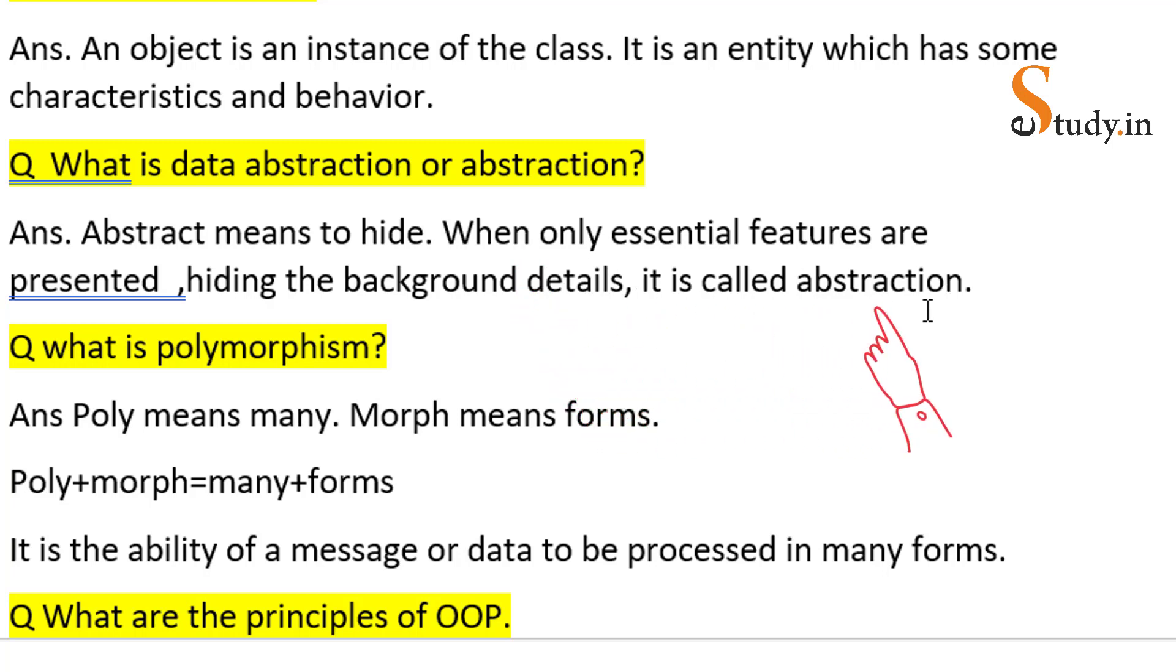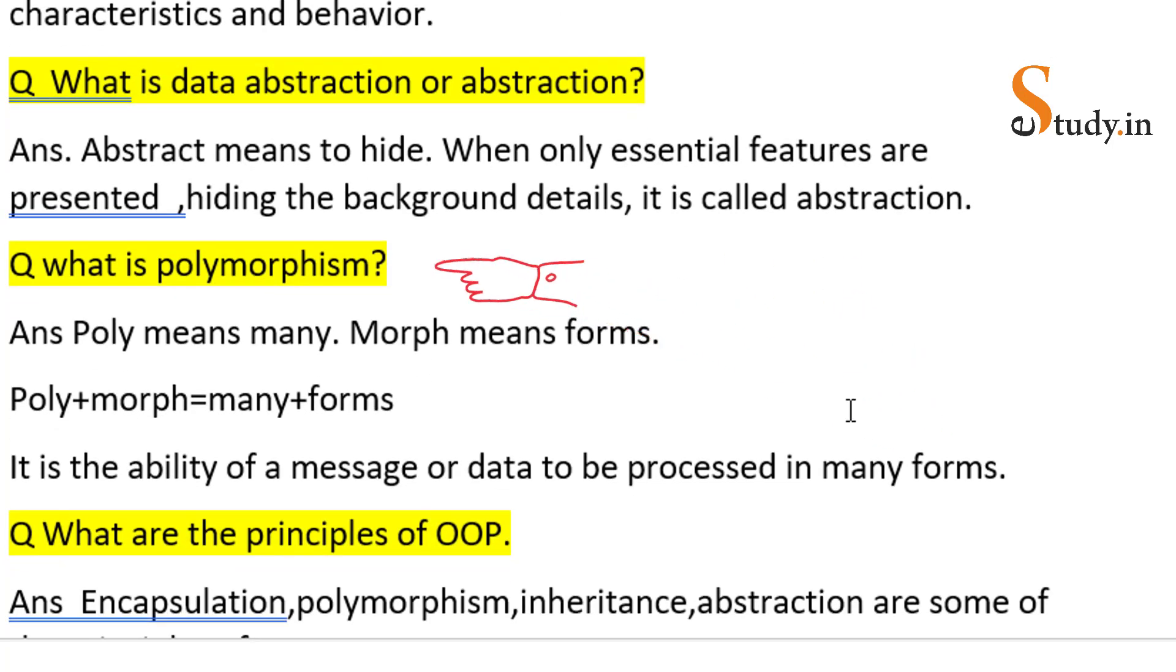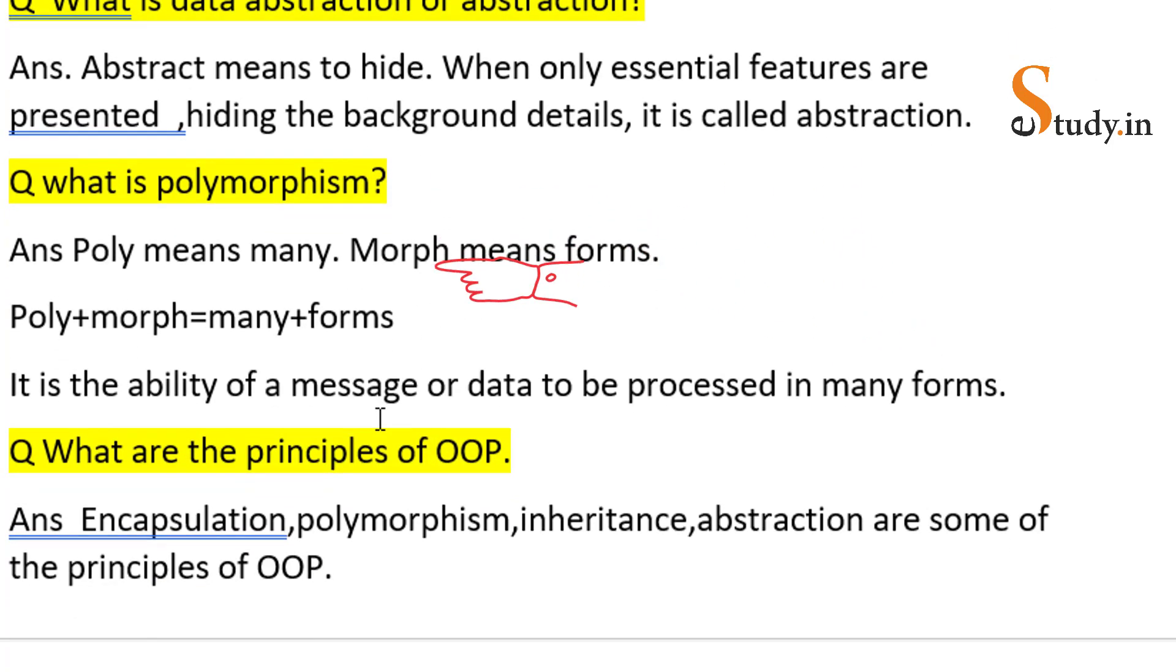Then the next question which is very commonly asked is 'What is polymorphism?' I've just given you a hint here so that you remember what's the answer. Basically, poly means many and morph means forms. Polymorphism is the ability of a message or data to be processed in many forms. You need not write this, this is only so that you remember it.